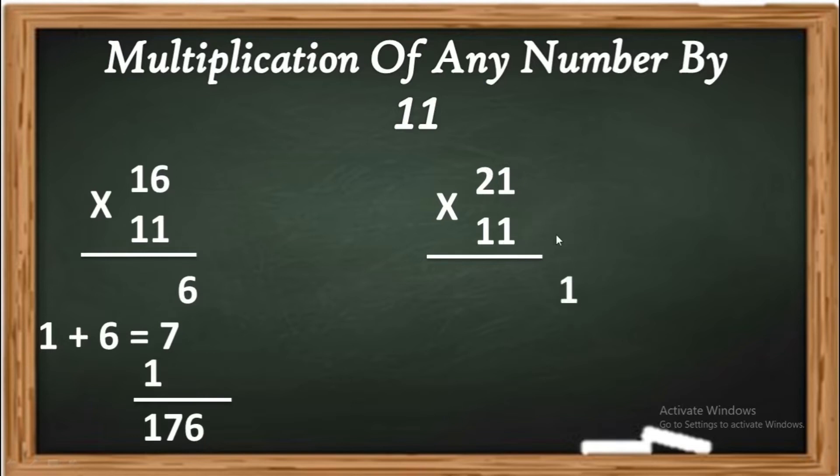In first step, at right side 1 as it is, leave space, at right side 2 plus 1 is 3, leave space one more space at right side, 2 as it is, and add them. 1, 3, 2.